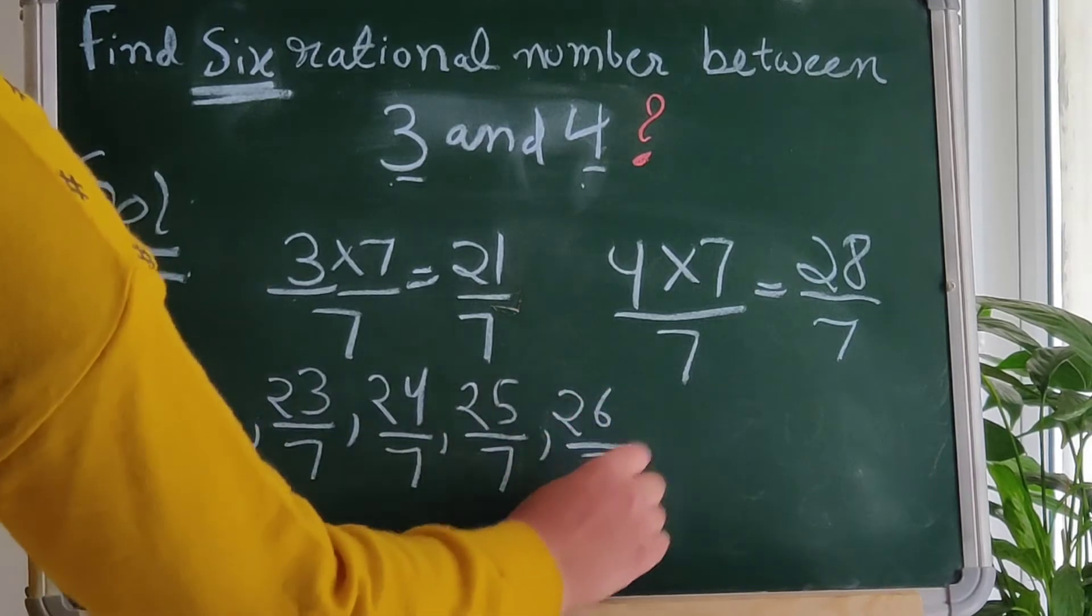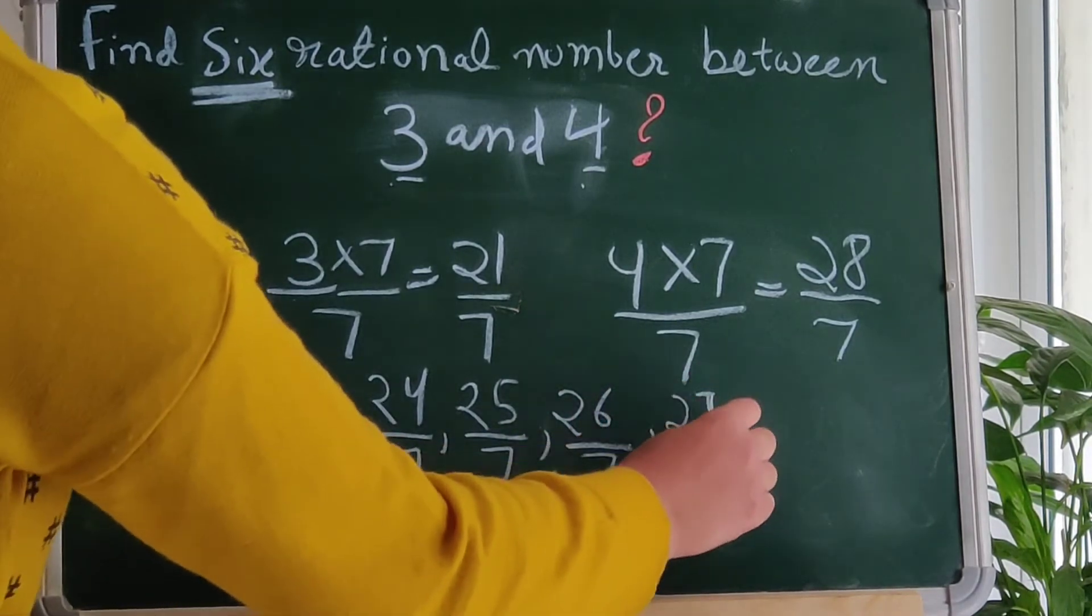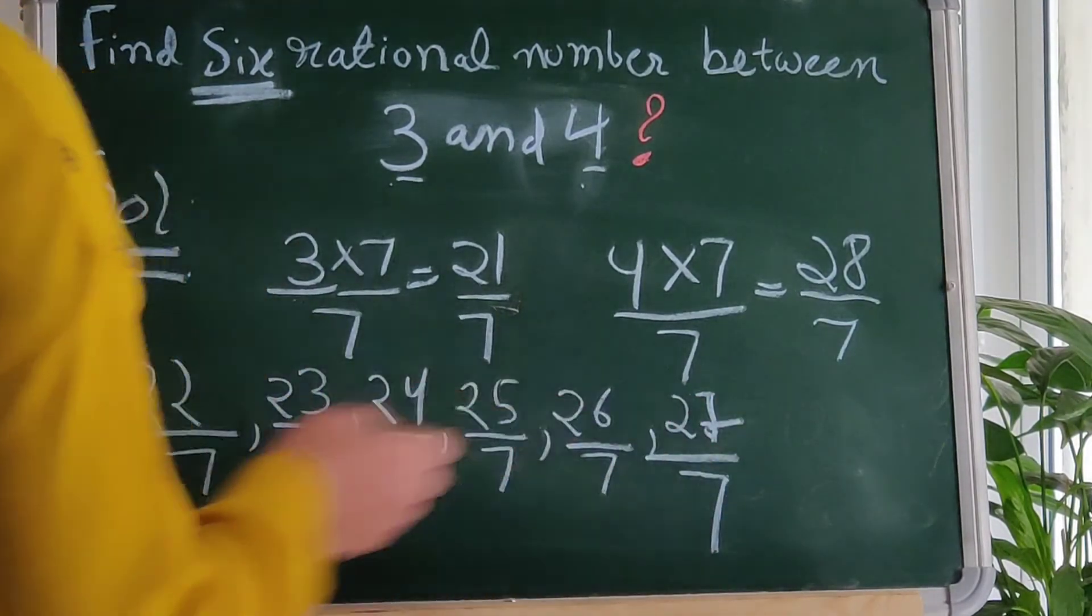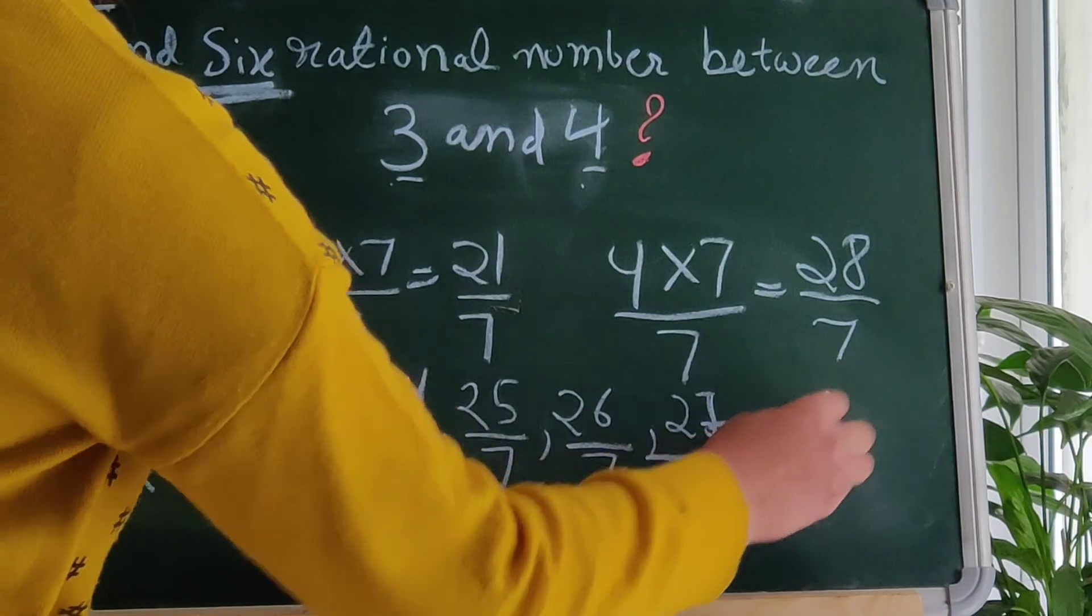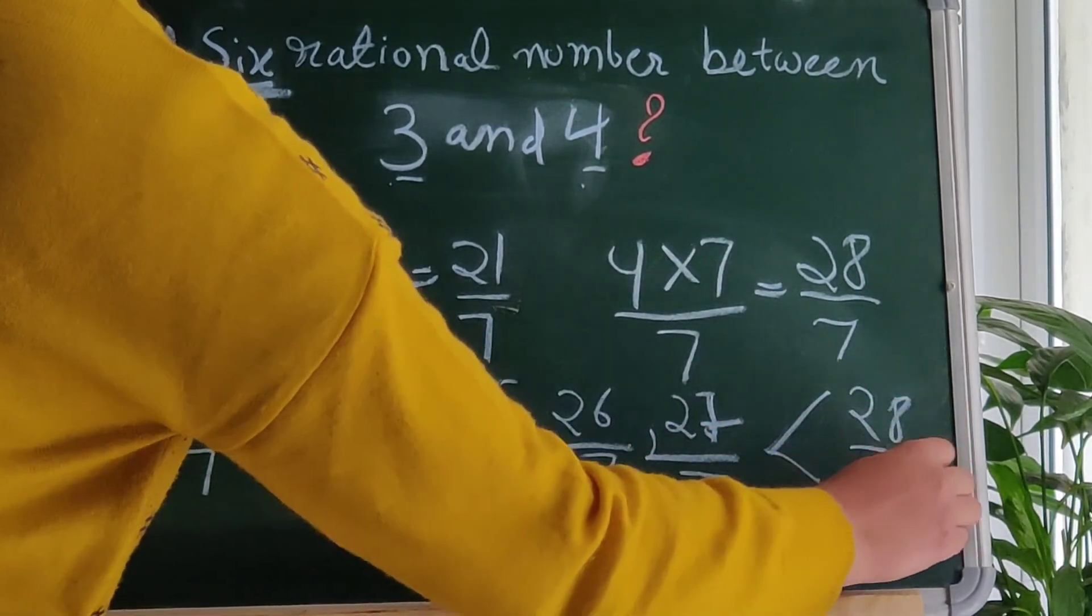26 by 7 and 27 by 7. All numbers are greater than 3 means greater than 21 by 7 and less than 4 means 28 by 7.